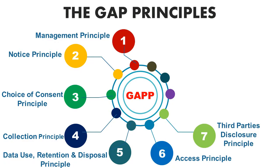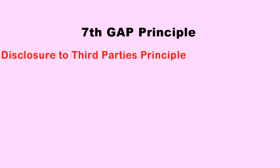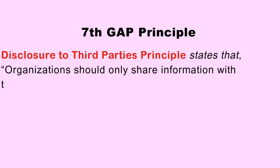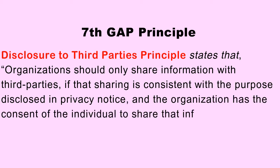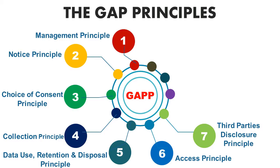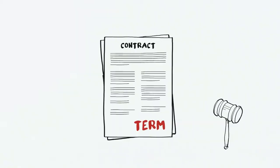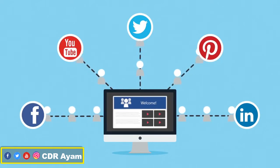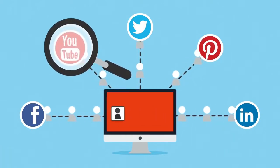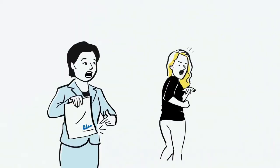The seventh GAPP principle is the Disclosure to Third Party principle. This principle states that organizations should only share gathered digital information with third parties if the sharing is consistent with the purpose disclosed in the privacy notice and with the consent of the individual whose data is being shared. Based on this principle, you have the right to sue any organization, especially internet service providers and social media platforms, that shares your digital information with third parties without stating it in their privacy notice and without your consent.